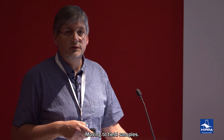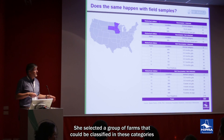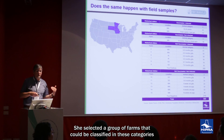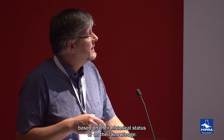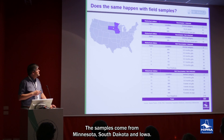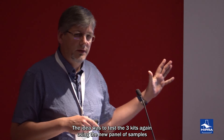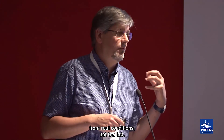We then moved to field samples. We defined a panel of samples thanks to Maria Peters from the University of Minnesota. She selected a group of farms that, based on historical status or knowledge, could be classified into categories: vaccinated and infected, vaccinated and not infected, not vaccinated and infected, and not vaccinated and not infected. The samples came from Minnesota, South Dakota, and Iowa. The idea was to test the three kits again using this new panel of samples from real field conditions.